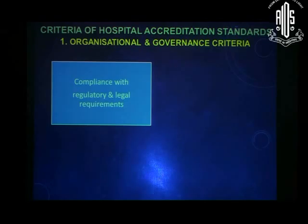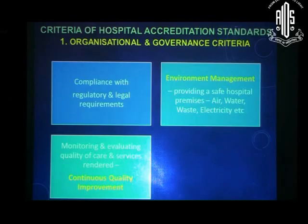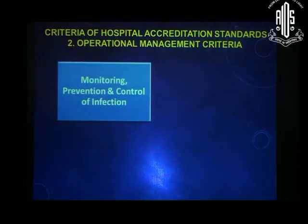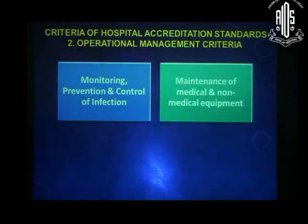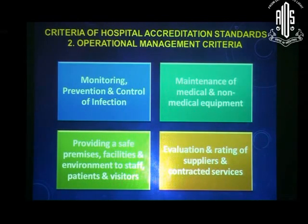Basically it revolves around four mechanisms. One is the legal requirement — that which you need to practice in our country. Another is the safety issue: providing a safe hospital premises, particularly in relation to air, water, waste, and electricity. You have to monitor these services and develop certain quality indicators — we call them smart indicators. When you have a critical unit like an operation theater, you must monitor prevention and control of infection. You have to maintain your medical equipment; otherwise you will have trouble. Provide safe premises for elderly people — in our ophthalmic practice, most patients are elderly, so you need ramps and safety measures. And evaluate and rate your suppliers and vendors.